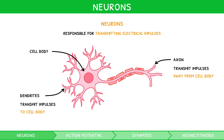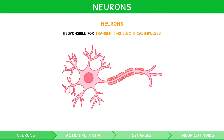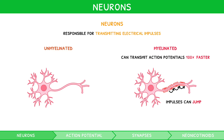However, some neurons have a unique outer coating consisting of many phospholipid layers, known as myelin. This myelin is created by specialised cells known as Schwann cells, which leave gaps known as nodes of Ranvier between adjacent cells. These myelinated nerves are capable of transmitting action potentials 100 times faster, as the impulse can jump from one node to another, a process named saltatory conduction.